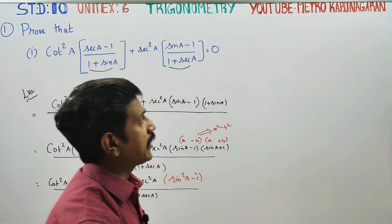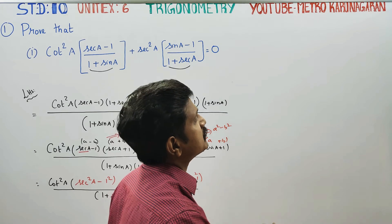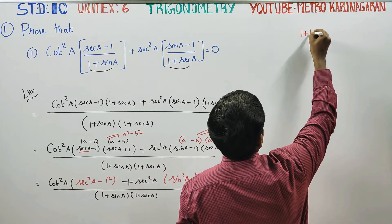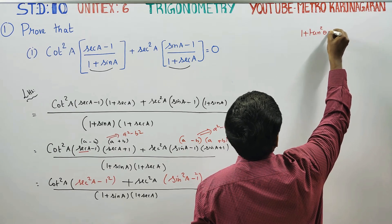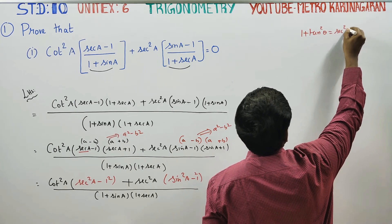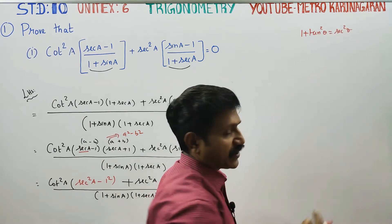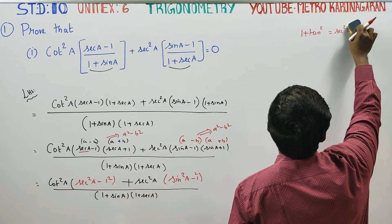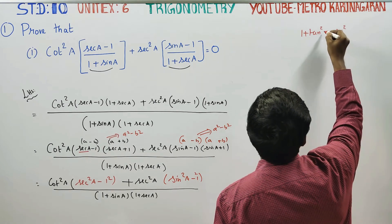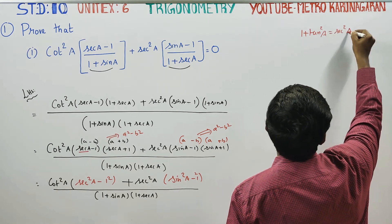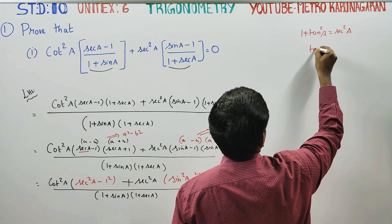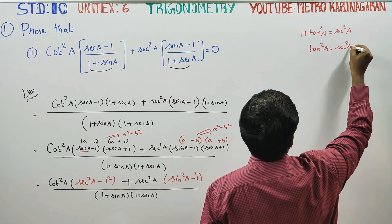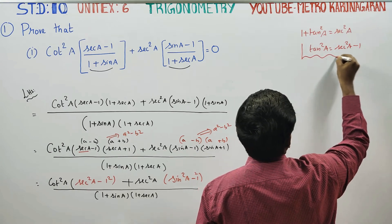Trigonometrical identities — that's what we need to revise. We know that 1 plus tan squared theta is equal to secant squared theta. Therefore, secant squared theta minus 1 is equal to tan squared theta.